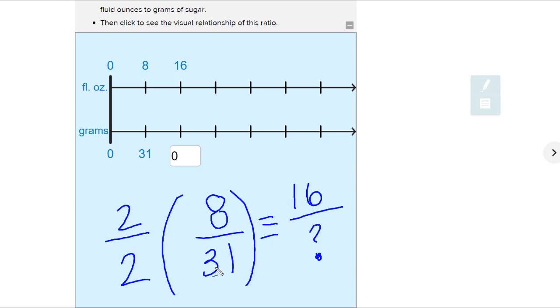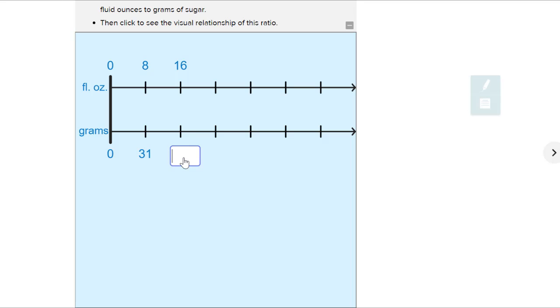So I know 2 times 31, I can do that math. It'll be 16, 31 times 2 will be 62. So if I know that this is 62, I can put my number in here.